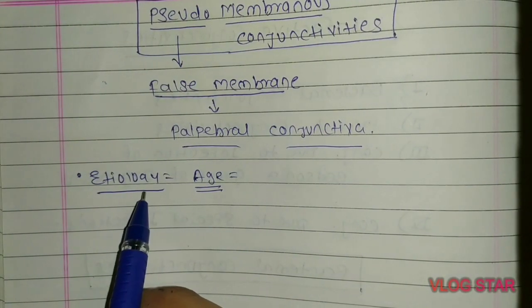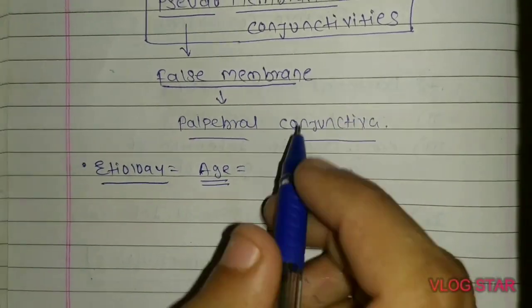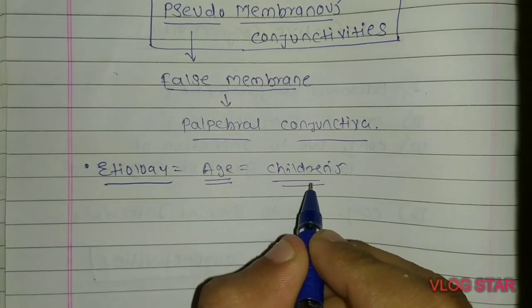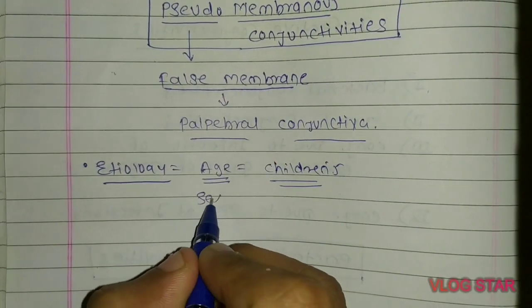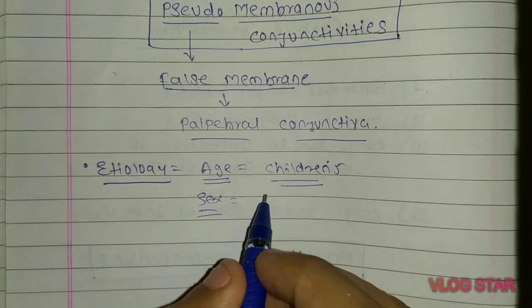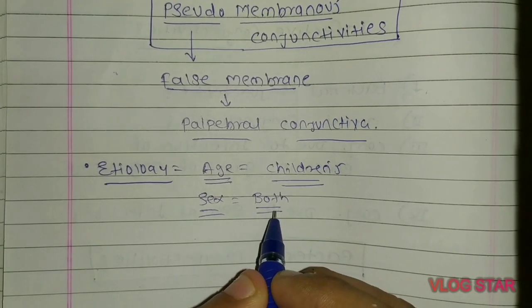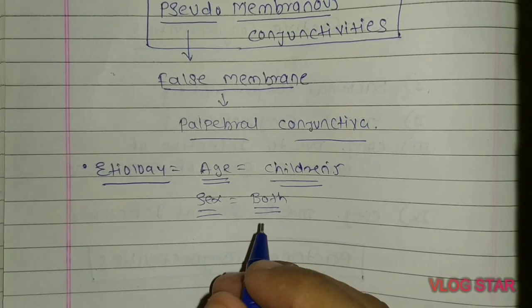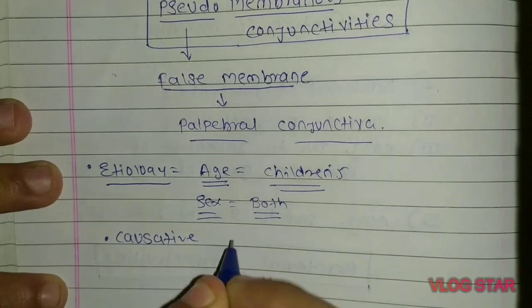In etiology, the first point is age. The age group most vulnerable to pseudomembranous conjunctivitis is mainly children. The second point is sex — there is no preference in sex, as both male and female are equally affected by pseudomembranous conjunctivitis. The third point is the causative organism.